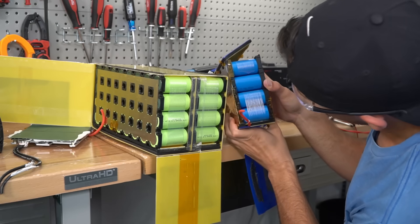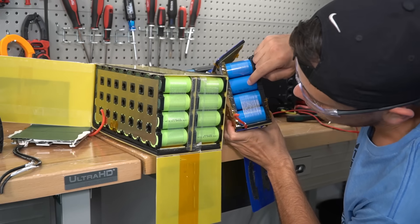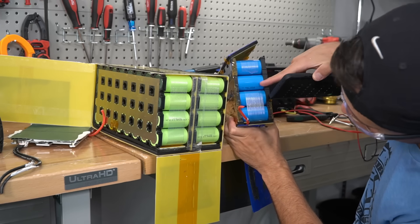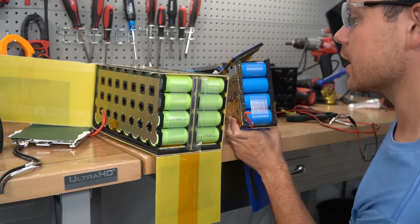Actually they're slightly different. These are 6,500 milliamp hour and these are 6,000 milliamp hour. So these have 20.8 watt hours and these have 19.2 watt hours each.